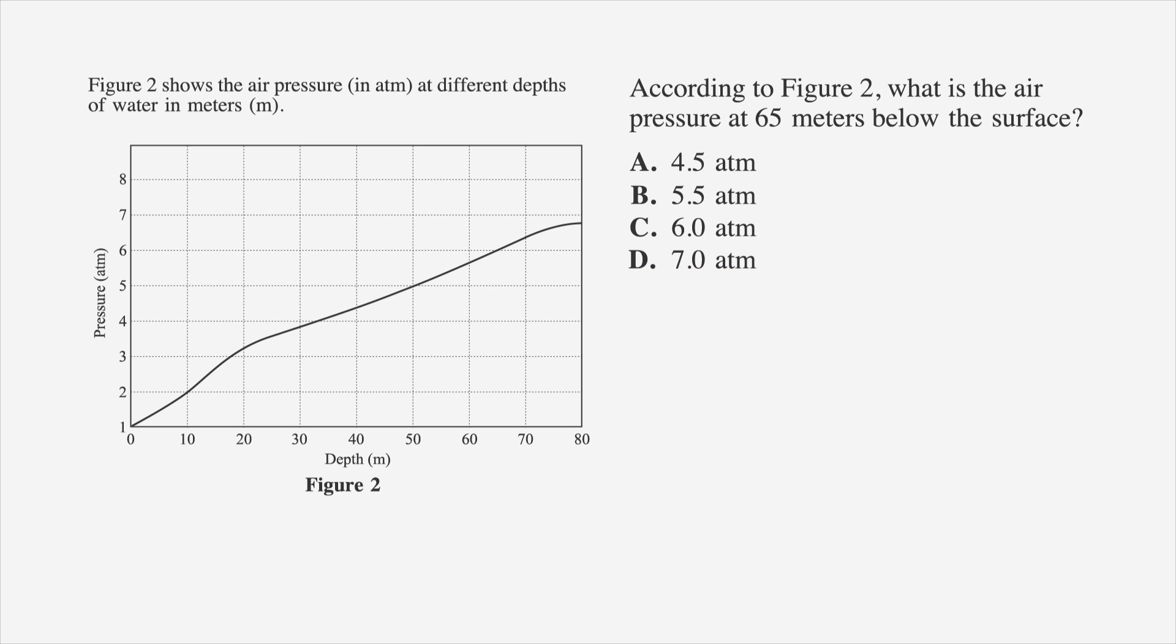To answer this question, look at Figure 2. Note where the units of measure are located on the graph. You'll find 65 meters on the horizontal axis, which represents depth. This is an example of how a graph can sometimes look counterintuitive because you might expect the depth to be represented vertically.